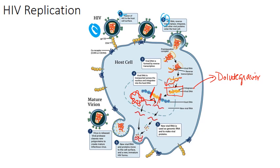Now we move into transcription — earlier we had reverse transcription, now we have transcription. Once the virus has been integrated, it follows the same cycle that normal cell replication would follow, where the viral DNA provirus is transcribed as a cellular gene by the host. An RNA polymerase 2 is used to replicate it. Transcription of the gene produces a full-length RNA, leading to the expression of proteins including gag, pol, gag-pol, and env.